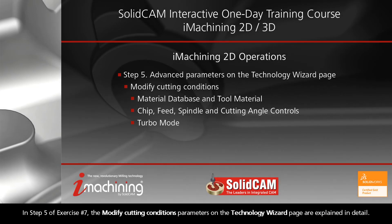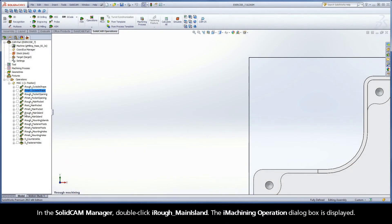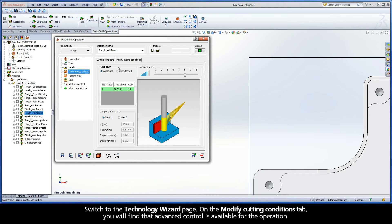In Step 5 of Exercise No. 7, the Modify Cutting Conditions parameters on the Technology Wizard page are explained in detail. These include the Material Database and Tool Material, Chip Control, Feed Control, Spindle Control, Cutting Angle Control, and Turbo Mode. In the SolidCam Manager, double-click iRuff Main Island. The iMachining Operation dialog box is displayed. Switch to the Technology Wizard page.